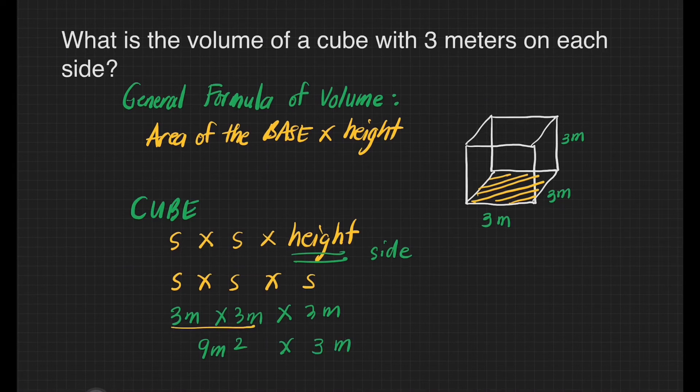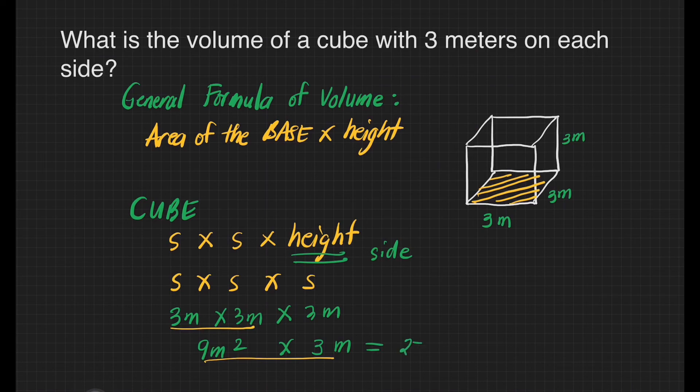To solve for the volume, just multiply the area of the base and the height. That is 9 meters squared times 3. That will give us 27 cubic meters. And that's it.